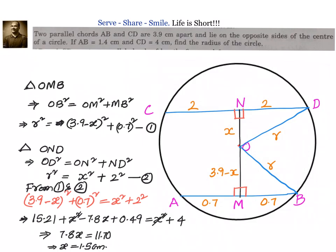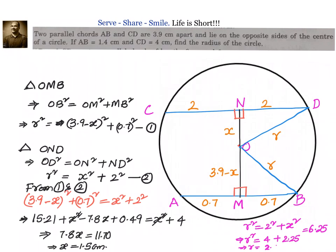Now that we know X equals 1.5 centimeters, we can find R using either triangle. Taking triangle OND: R² = 2² + X² = 4 + (1.5)² = 4 + 2.25 = 6.25. Therefore R equals √6.25 = 2.5 centimeters. We can verify this using triangle OMB with R = 2.5, OM = 3.9 − 1.5 = 2.4, and MB = 0.7 — Pythagoras theorem is satisfied, confirming our radius is correct.